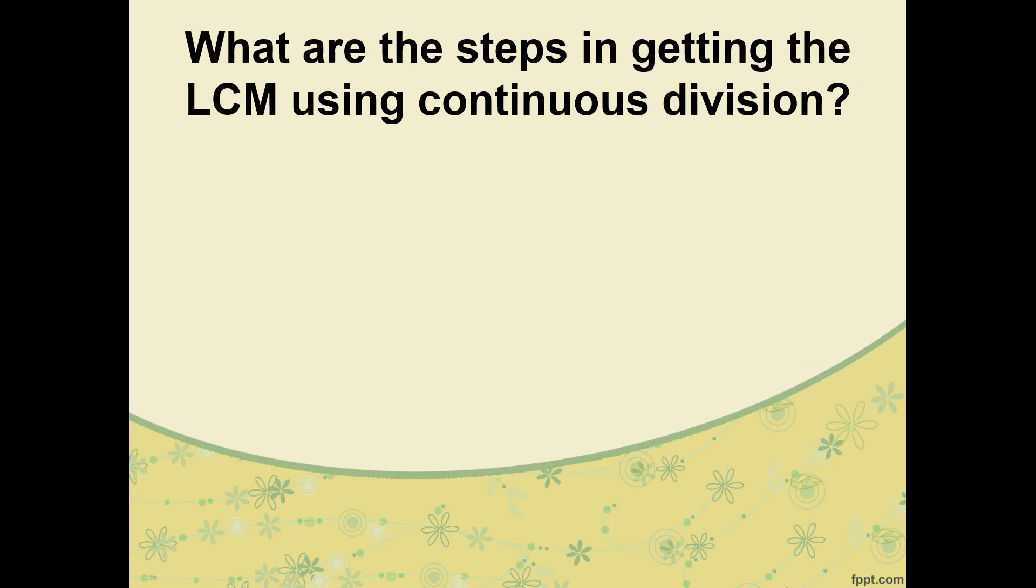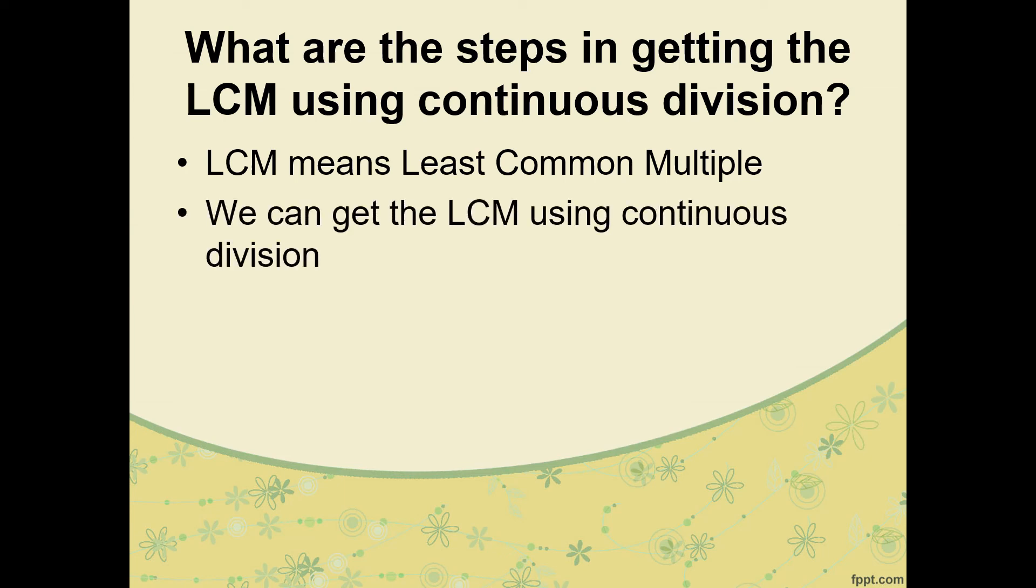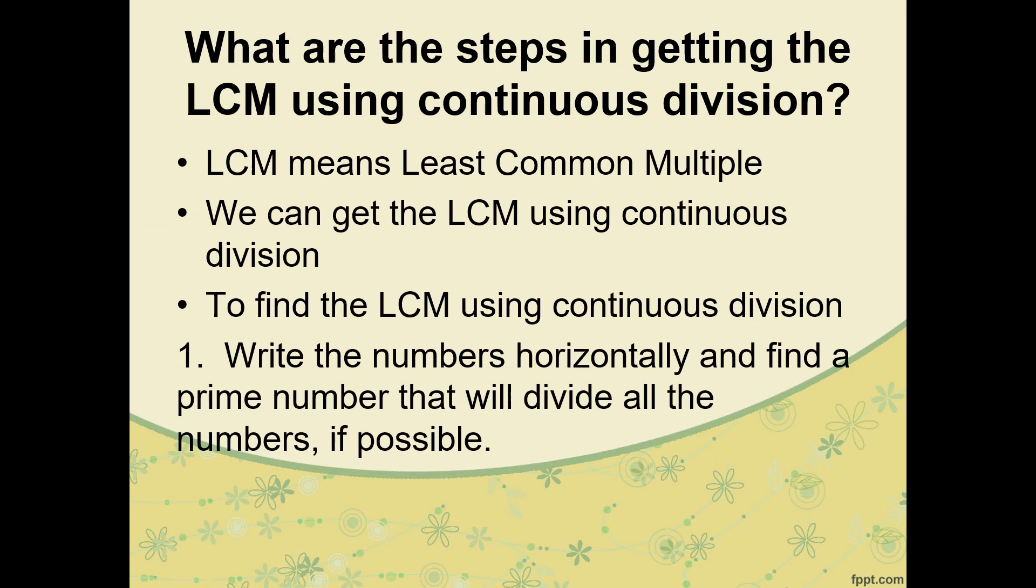What are the steps again in getting the LCM using Continuous Division? First, LCM means Least Common Multiple. We can get the LCM using Continuous Division. To find the LCM using Continuous Division, number one: write the numbers horizontally and find the prime number that will divide all the numbers if possible. We need to know the prime numbers, so we always start with 2, 3, 5, 7, 11, and so on.